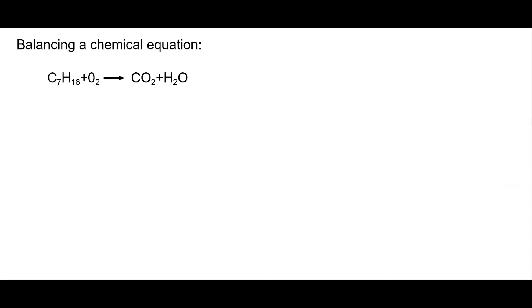We're going to use our linear algebra skills and balance a chemical equation. We want to start by creating a template vector. Look at the elements in your equation and list out the elements in your vector. You can do it in any order, but you just want to be consistent throughout your problem.